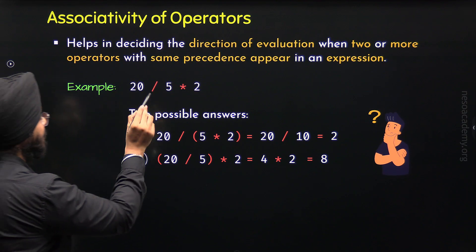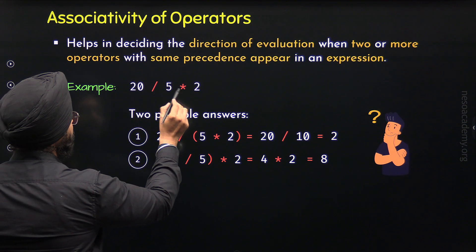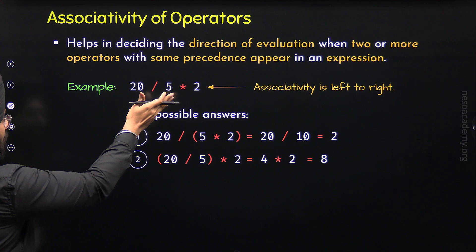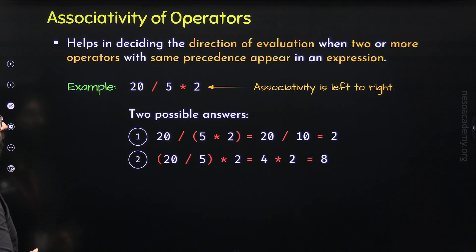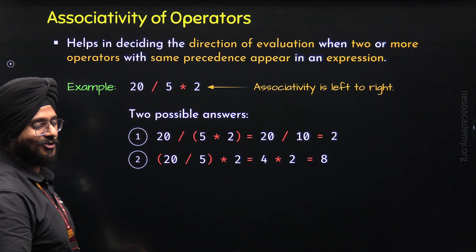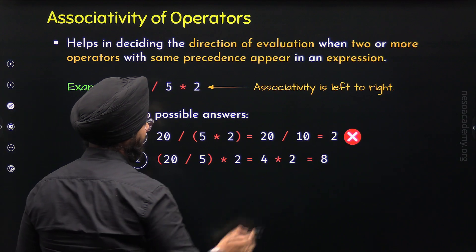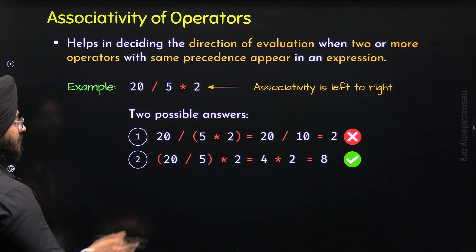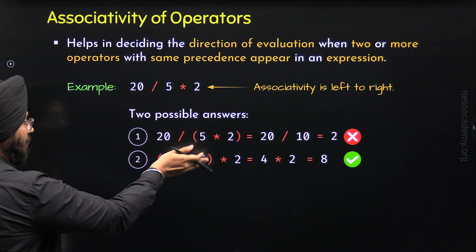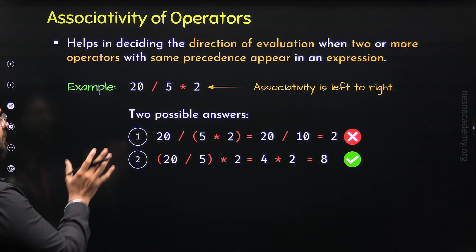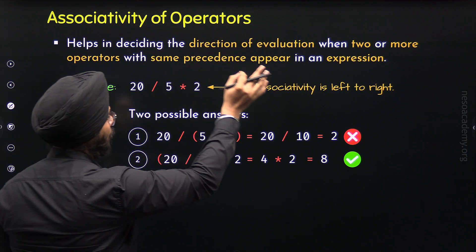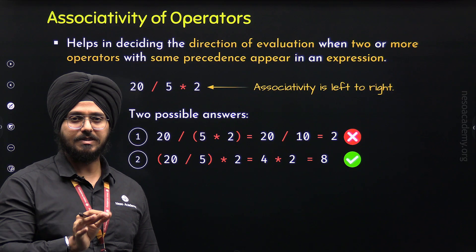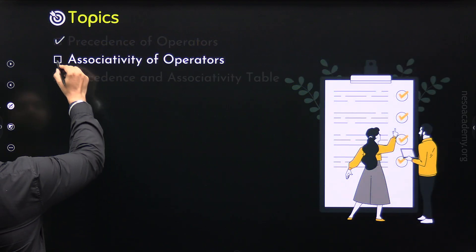Associativity helps in deciding the direction of evaluation. The direction of evaluation of division and multiplication is left to right — this is already decided. So we evaluate division first, then multiplication, in the order they appear. Division is performed first: 20 divided by 5 is 4, and 4 times 2 is 8. So the correct answer is 8. Associativity helps in deciding the order of evaluation especially when operators have the same precedence.